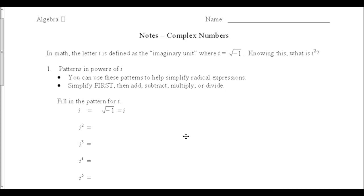This video will contain the notes for working with complex numbers. In math, the letter i is defined as the imaginary unit, where i is the square root of negative 1. You have to know this fact: i is the square root of negative 1.